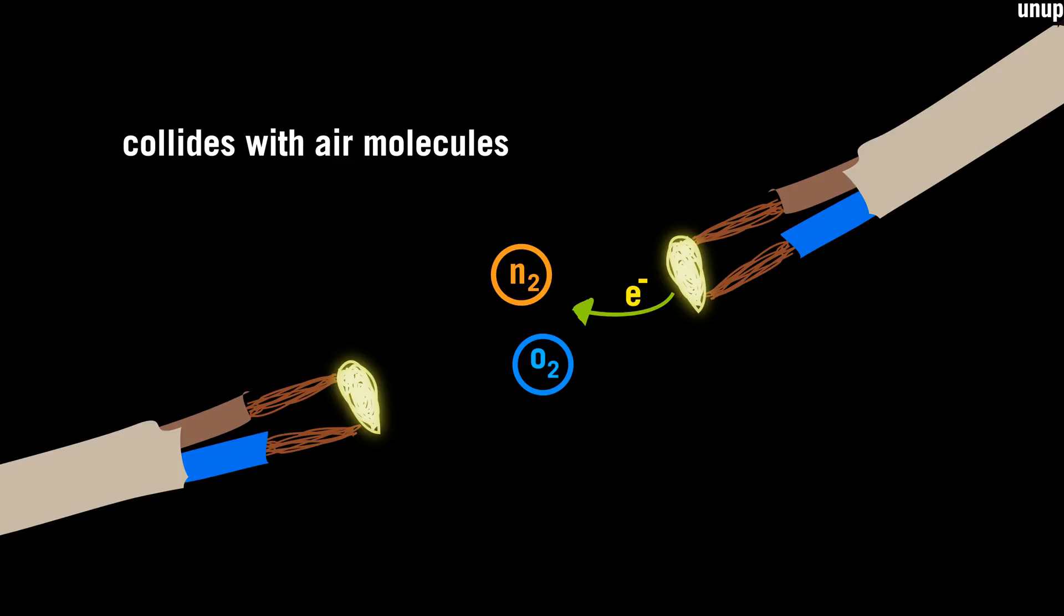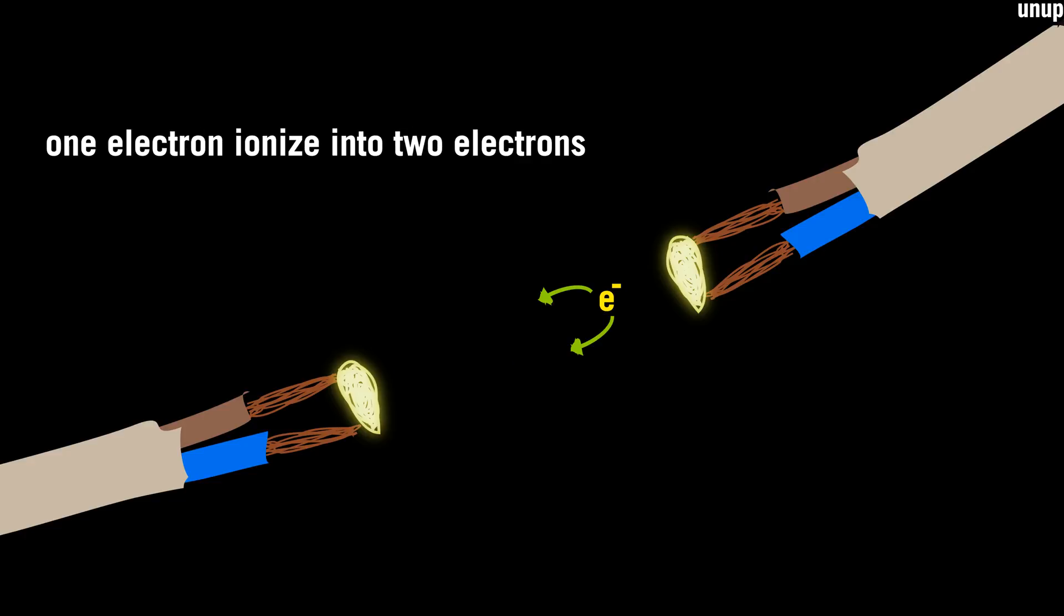The air is made up of nitrogen and oxygen. The electron gets kinetic energy, and if that energy is high enough, then one electron ionizes into two electrons.